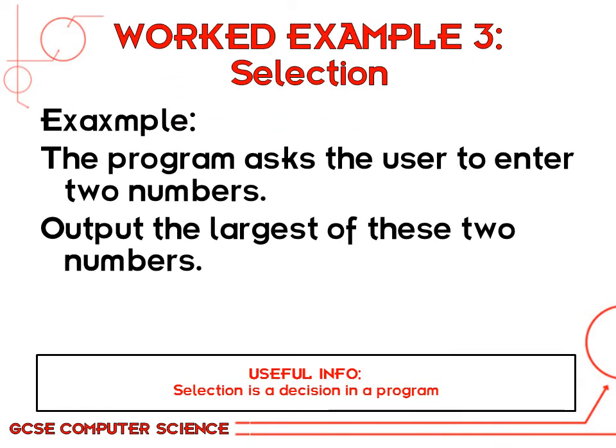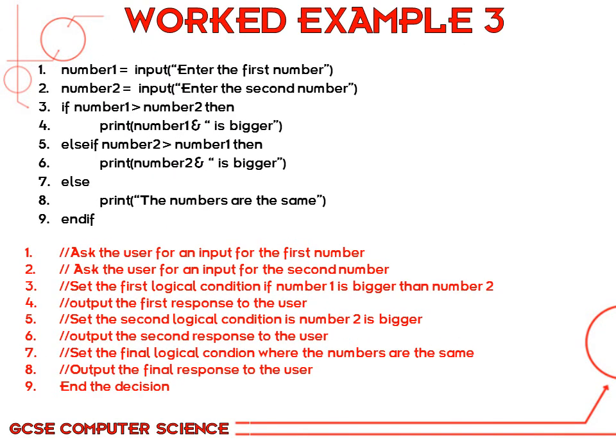Let's take a look at an example program with selection. The program is going to ask the user to enter two different numbers and output the largest of those two numbers. So we need a logical decision here — which one's bigger. If one number is bigger, output this; if the other number is bigger, output that. Let's look at the worked example pseudocode for this problem.